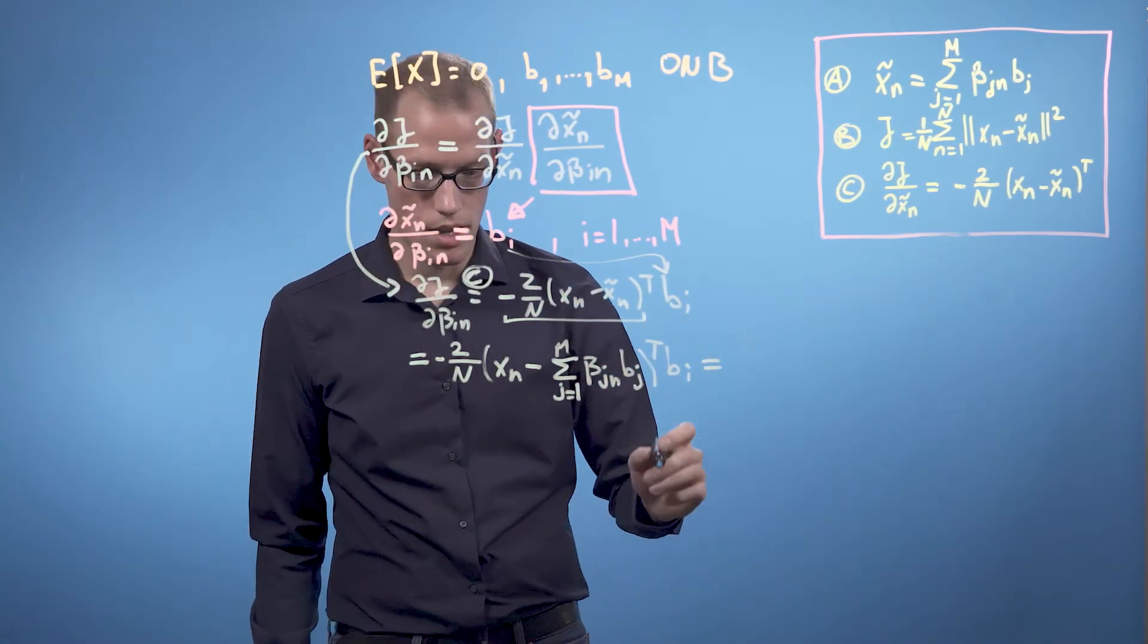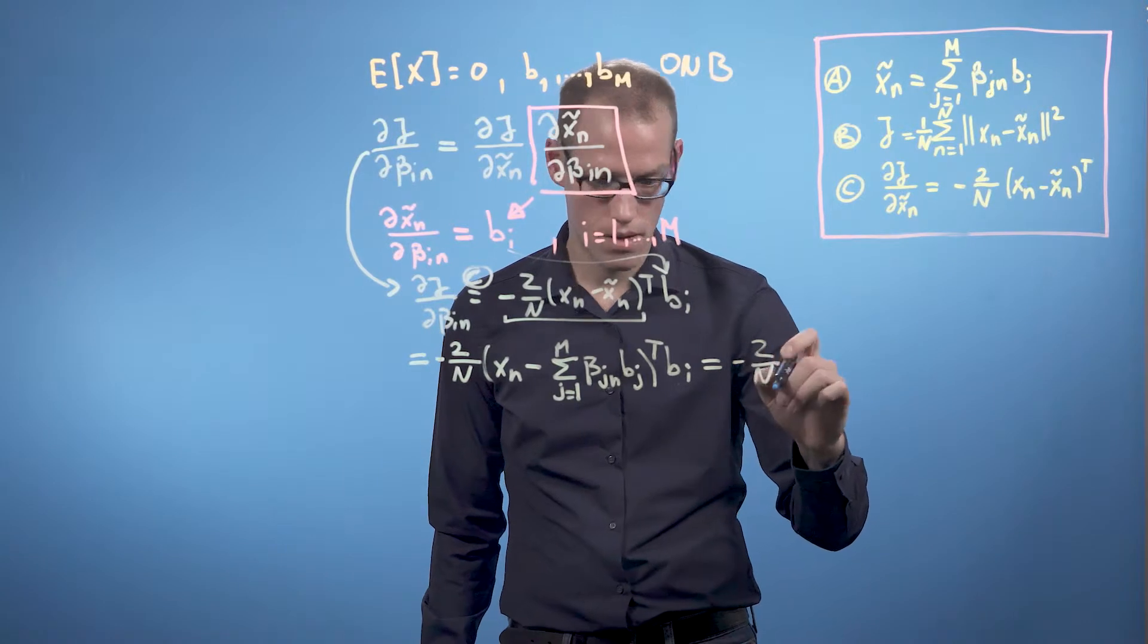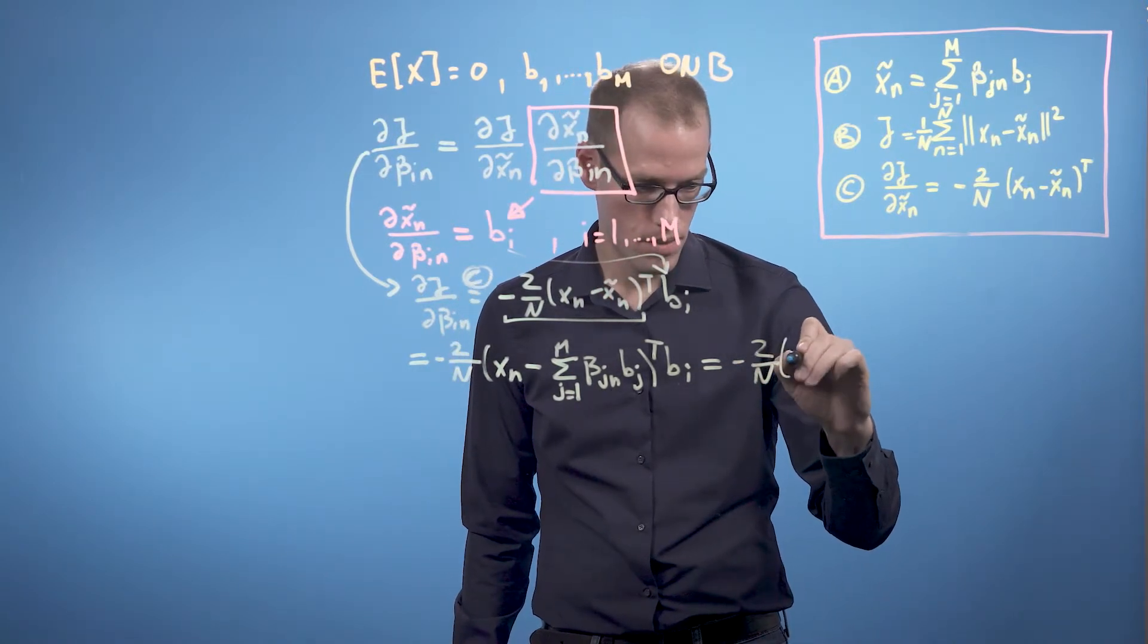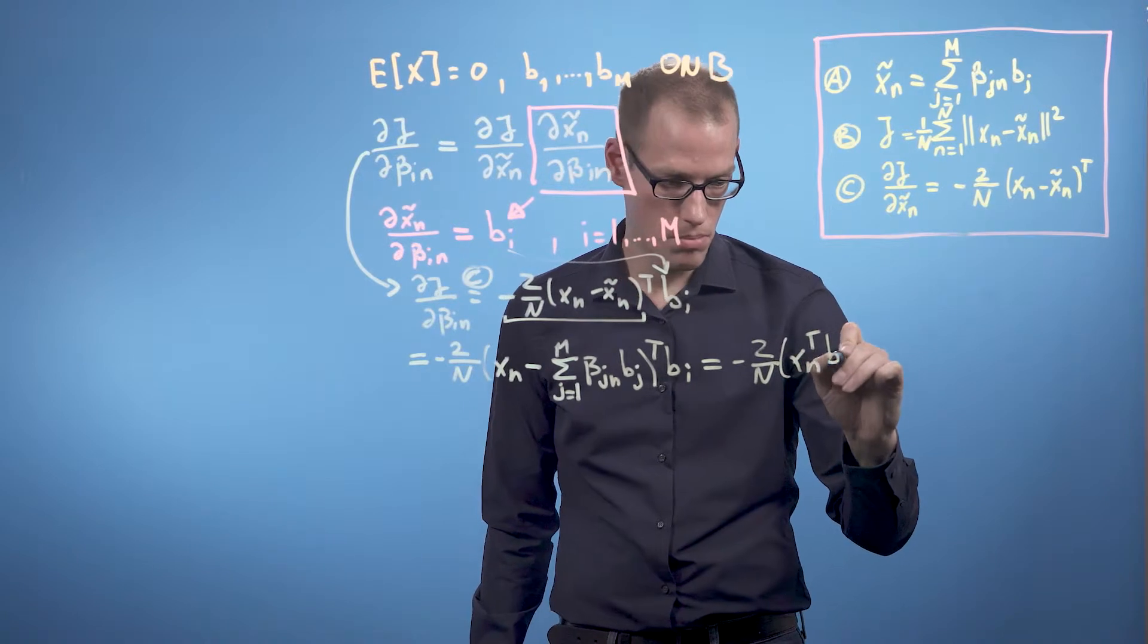And this is given as minus 2 over n times xn transpose times bi.